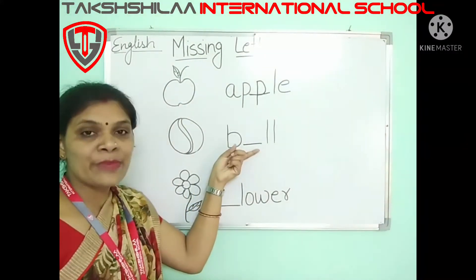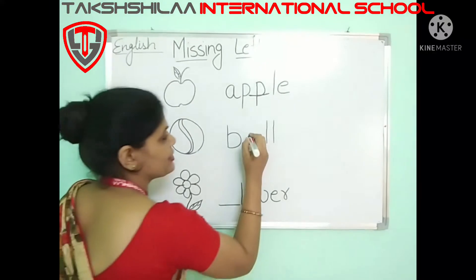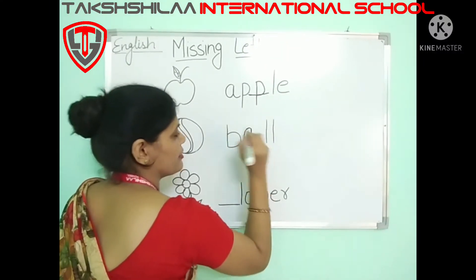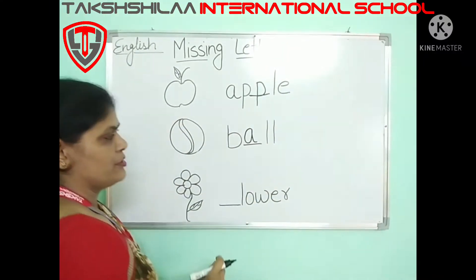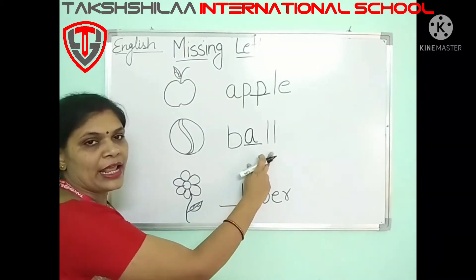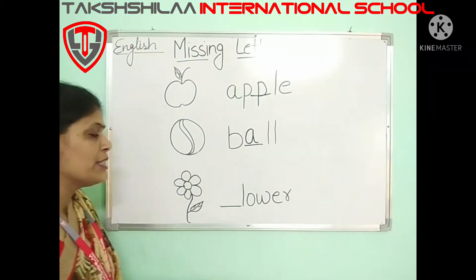A is missing here. Let's write A. Now the spelling is B, A, double L — ball. Okay?